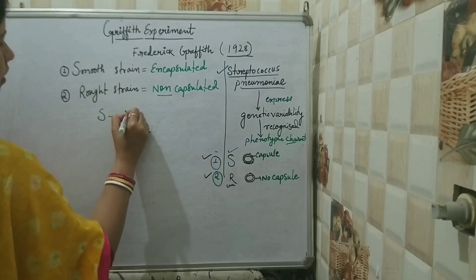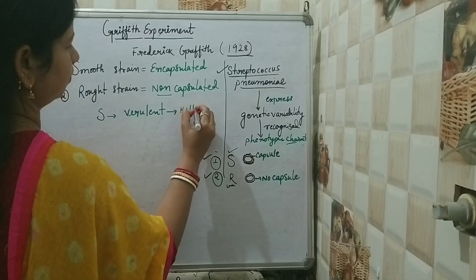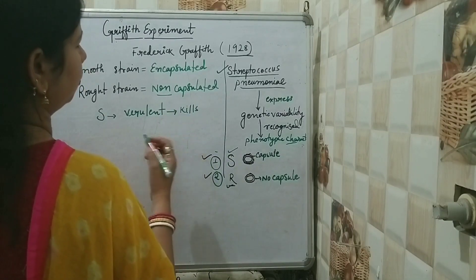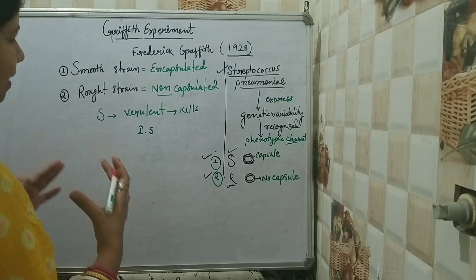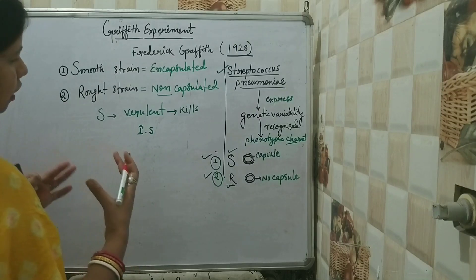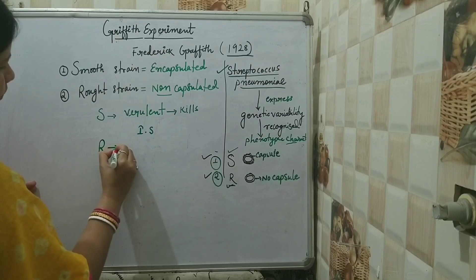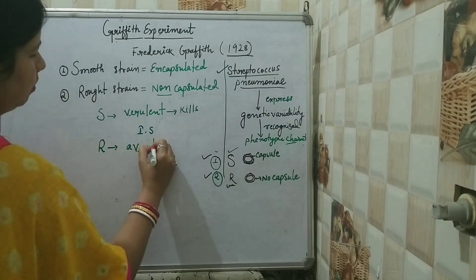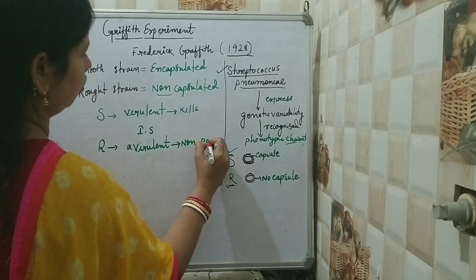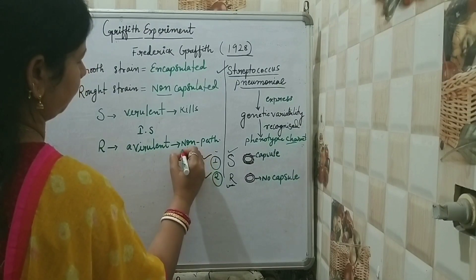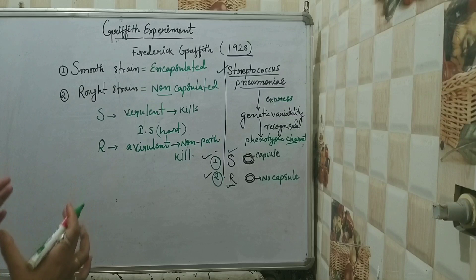Smooth strain is virulent, meaning it kills the host cell after causing pneumonia, because the immune system of the host is not able to recognize the bacteria due to the presence of the polysaccharide capsule layer. That is why the smooth strain acts as a virulent strain. In the case of rough strain, it is avirulent and non-pathogenic in nature. It will not kill the host cell because it is recognized and killed by the immune system of the host.